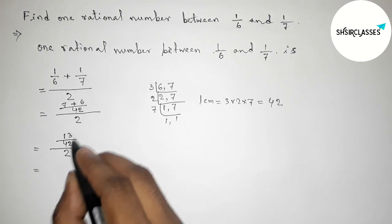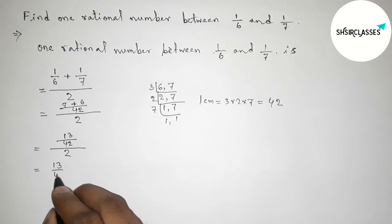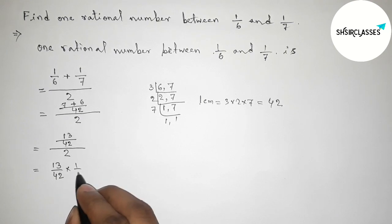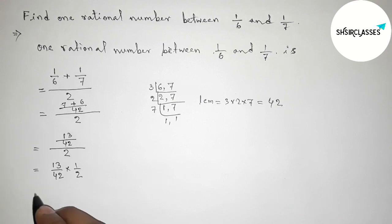Now again simplifying this, so 13 by 42, and taking inverse of 1/2, so now here 13 by 84.